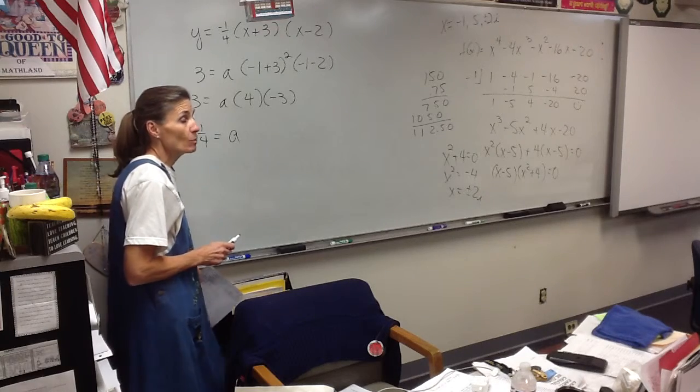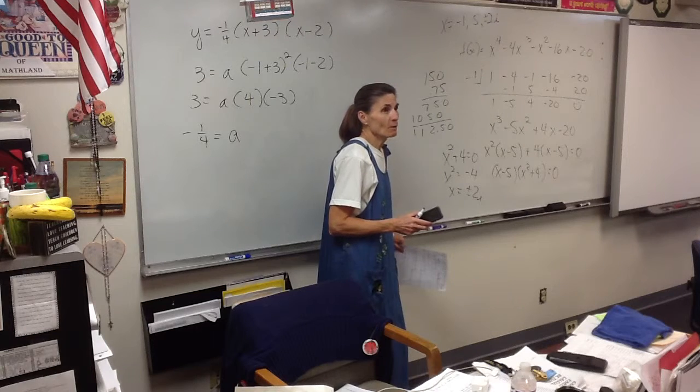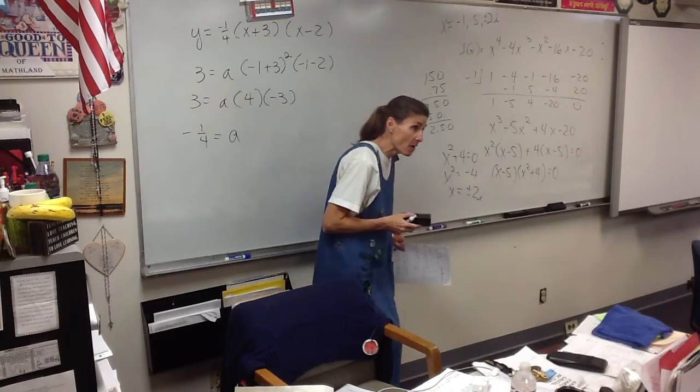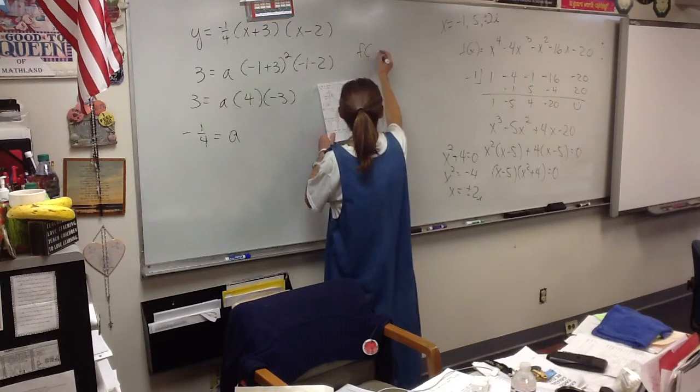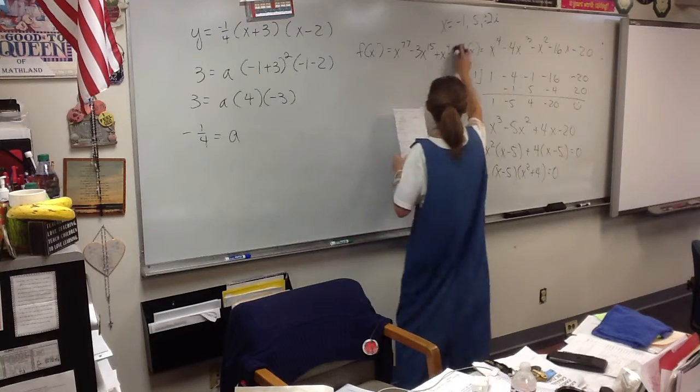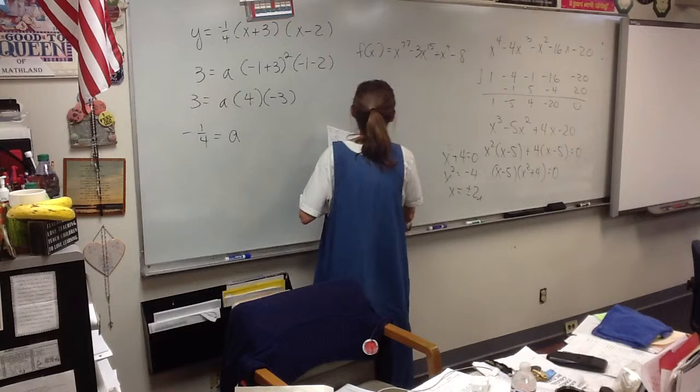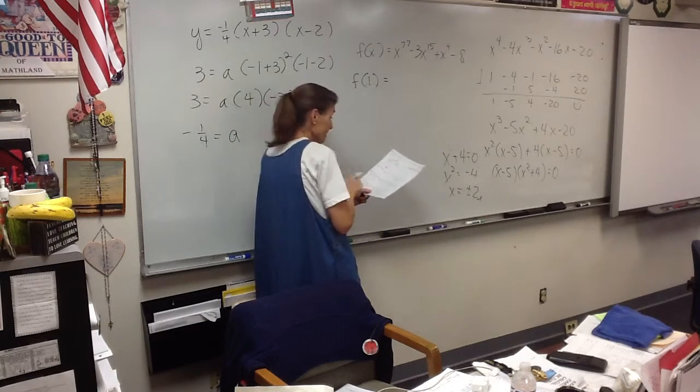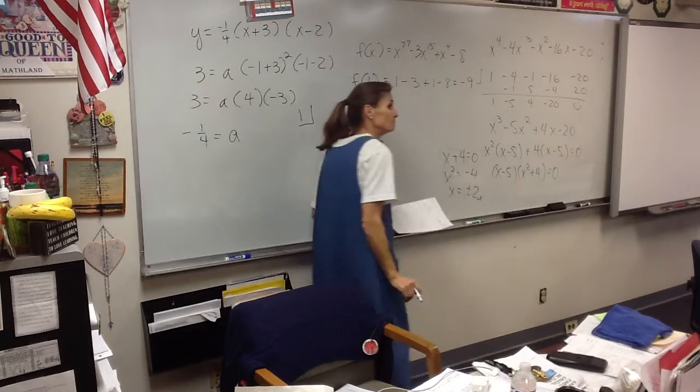Anything else? Number seven, find the remainder. Someone actually wrote there isn't enough room to work this problem. Yes, there is not enough room if you're going to divide it out. That's the point, don't divide. Just plug in the number. Think of this as a function and then simply plug in the number you would have divided by. So I'm going to plug in one and I'm going to get negative nine. That's my remainder.